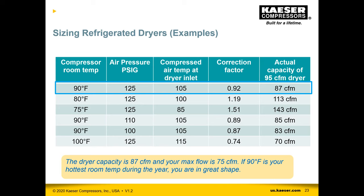The other lines on the chart show how you'd adjust drying capacity under different temperature conditions and pressures. If you dropped room temp another 10 degrees, that 95 CFM dryer could handle an even larger compressor flowing through it. The correction factors are really important to make sure you've selected the right dryer.